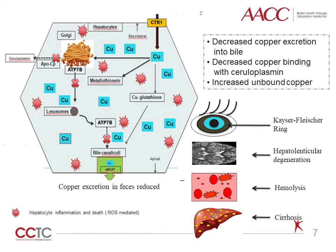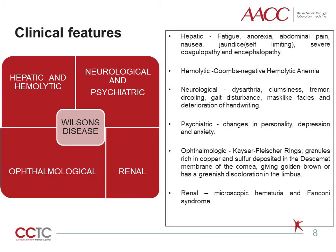The major presentation in Wilson's disease involves hepatic, neurological and psychiatric, also ophthalmological and renal systems. Hepatic presentation like fatigue, anorexia, abdominal pain, nausea, jaundice, although self-limiting, severe coagulopathy and encephalopathy are observed due to hepatic steatosis, inflammation, fibrosis, cirrhosis and liver failure.